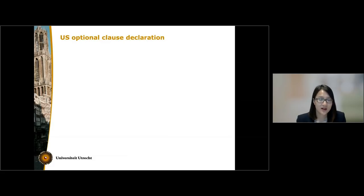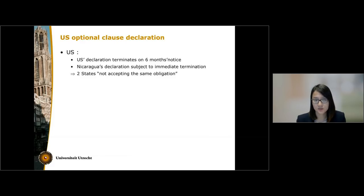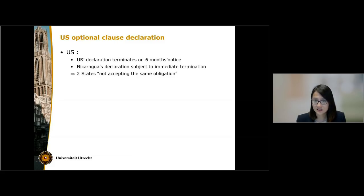Regarding the temporal condition, the US argued that it had committed by virtue of its 1946 declaration to terminate the declaration only on six months' notice. In contrast, Nicaragua's 1929 declaration was indefinite in duration, and therefore was subject to immediate termination without the need for prior notification. On this basis, the US argued that Nicaragua and the US had not accepted the same obligation as required under Article 36, Paragraph 2 of the ICJ Statute.